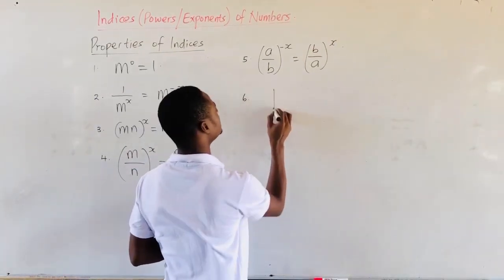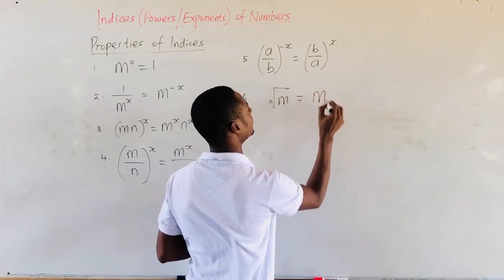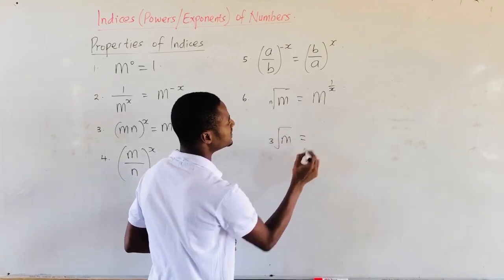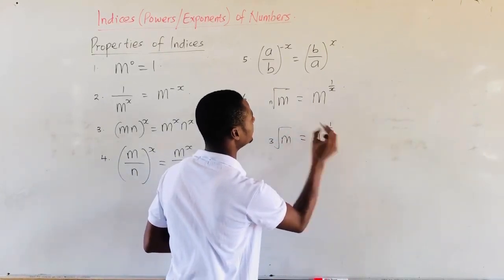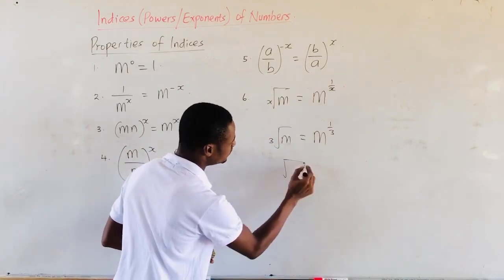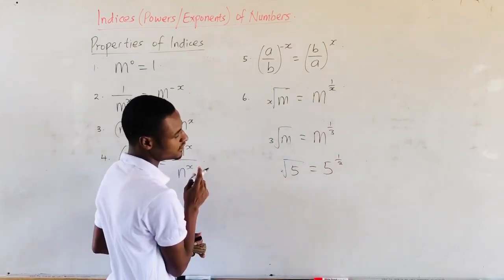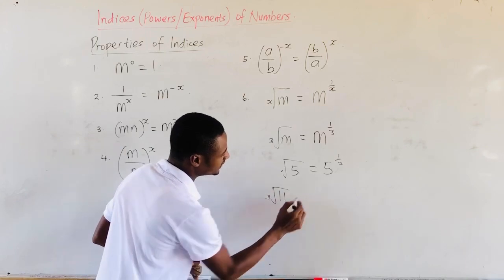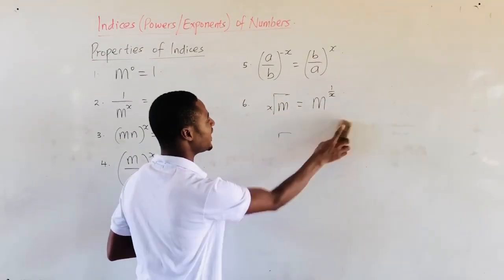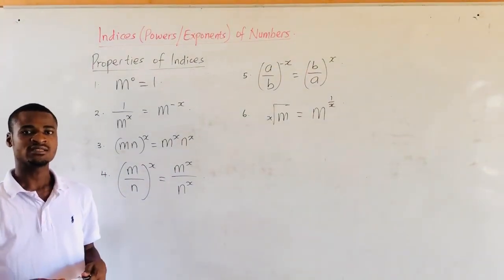The seventh property is the nth root of a number. If we have the cube root of M, it is equal to M raised to the power 1 over 3. In general, the nth root of a number equals the number raised to the power 1 over n. So the square root of 5 is the same as 5 raised to the power 1 over 2, and the cube root of 11 is the same as 11 raised to the power 1 over 3.